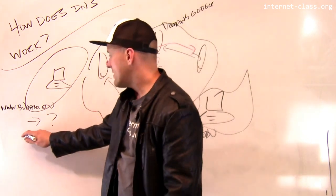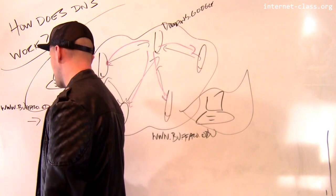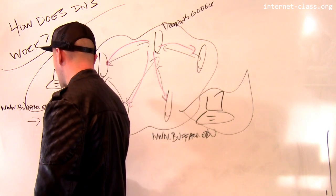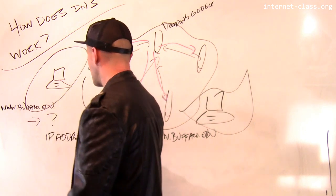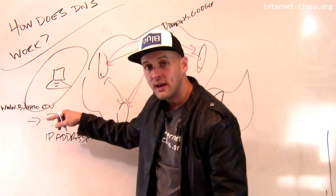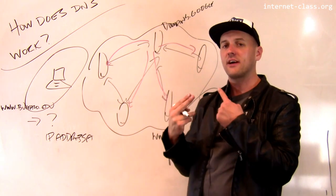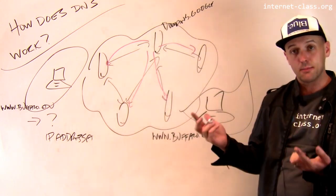And so when this computer looks up www.buffalo.edu, it gets IP address, let's just call this A, and IP address A is located close to it. And so the connection that it has with that server is fast and the page loads quickly.